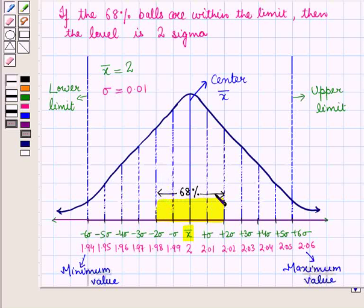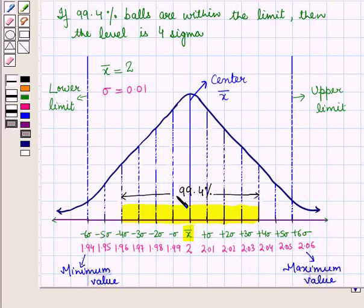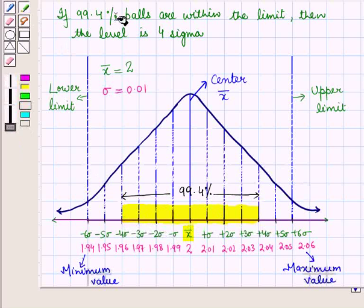If 68% of balls are within the limit, then the level is 2 sigma. Now, if 99.997% of balls are within the limit, then the level is 4 sigma.